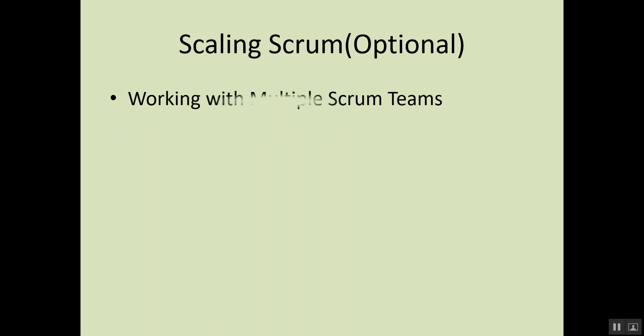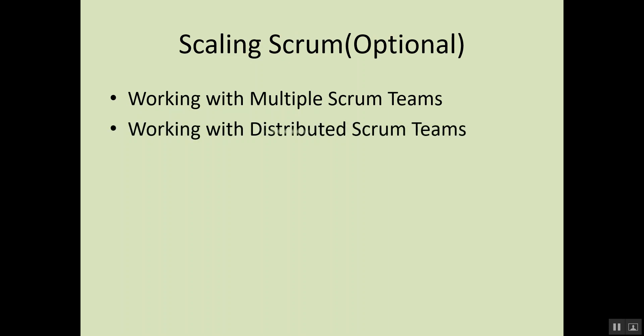The last topic is an optional one about scaling — what we should do when working with multiple Scrum teams, and how we can work with a distributed Scrum team. These are the topics that get covered when you attend the two-day Certified Scrum Master training.